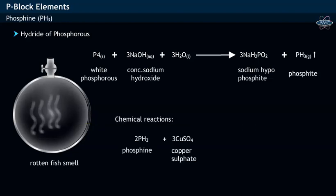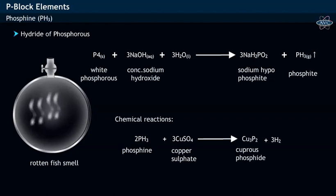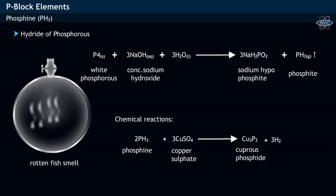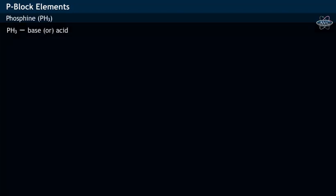Phosphine on reaction with copper sulfate forms cuprous phosphide (Cu₃P₂). Let us see whether phosphine acts as a Lewis base or Lewis acid.